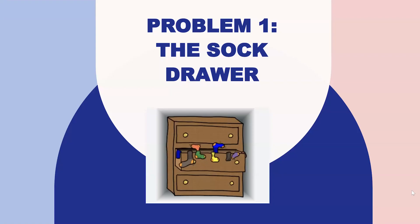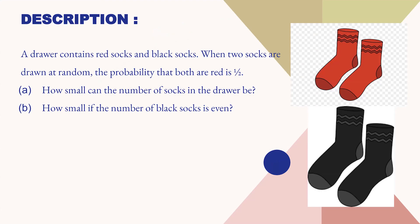The first problem from the '50 Challenging Problems' book that we are going to discuss is the sock drawer problem. In this question, we have a drawer which contains red socks and black socks. We are randomly picking two socks, and according to the question, if both socks are red, that probability should be equal to one by two. The first part asks: if this condition is true, what is the minimum number of socks? The second part asks: if the number of black socks is even, what should be the minimum total number of socks for the above condition to hold true?